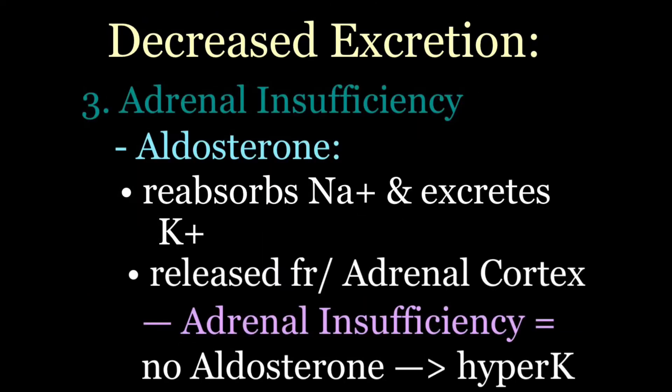Adrenal insufficiency can also cause decreased excretion of potassium. Remember that aldosterone is released from the adrenal cortex and causes the reabsorption of sodium and the excretion of potassium. If we have adrenal insufficiency, such as occurs in Addison's disease, the adrenal gland is not working and we cannot secrete aldosterone, which means we can't excrete potassium — so potassium will build up in the body.